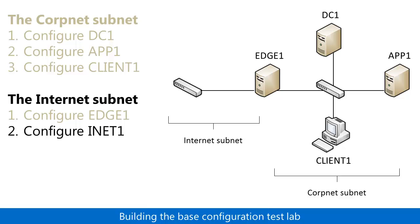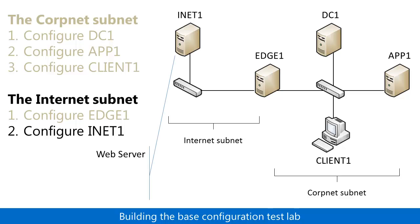In Step 2, you add a computer named Inet1 and configure it as a web server, a DNS server, a DHCP server, and with additional settings so that Client1 detects the Internet subnet as the real Internet.